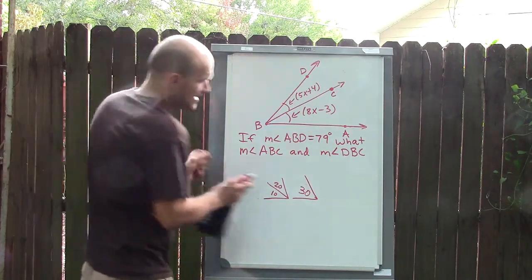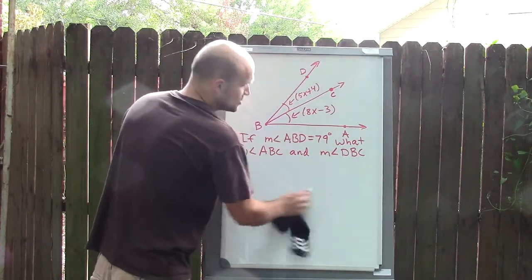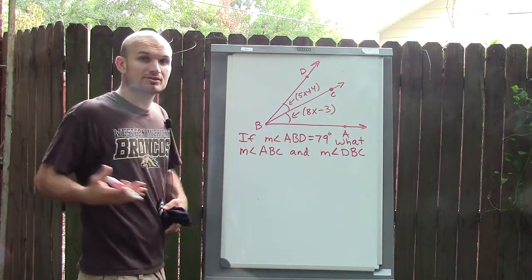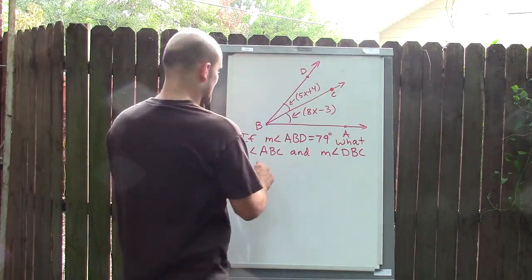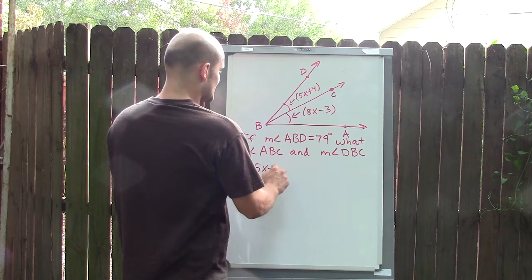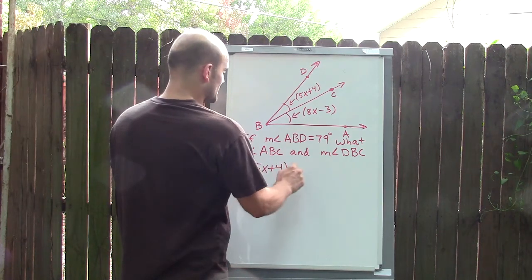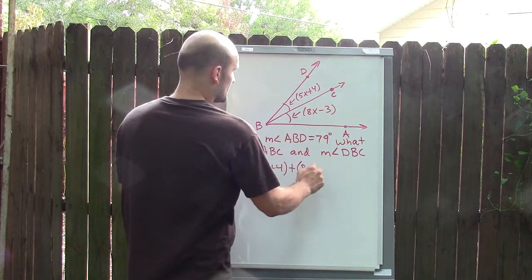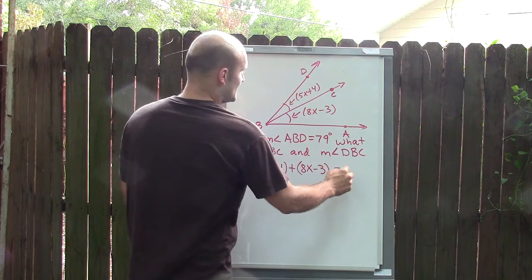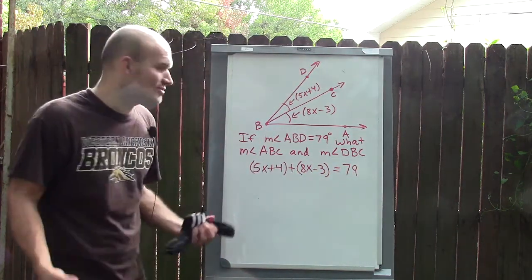That's exactly what I'm going to do to write my equation so I can solve for X. Remember, using an equation is going to help us solve for X. So I'm going to write 5X plus 4, and I'm just going to put them in parentheses, plus 8X minus 3 equals 79.